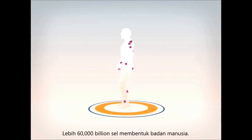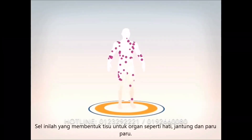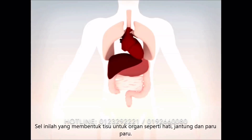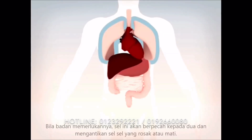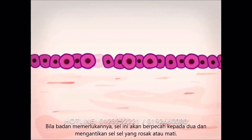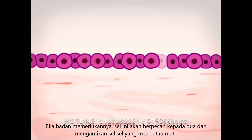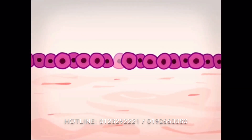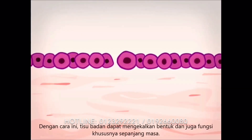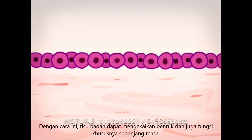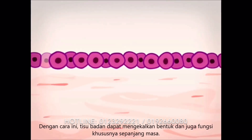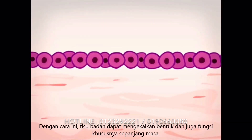More than 60,000 billion cells make up the human body. They are the units that form the tissues which make up our organs like the liver, heart and lungs. When the body needs it, our cells split into two and replace those cells that are defective or have come to the end of their lifespan. This makes it possible for our tissues to preserve their shape and their respective functions with the passage of time.